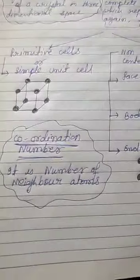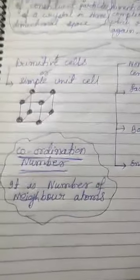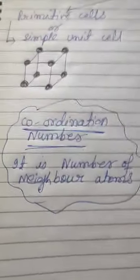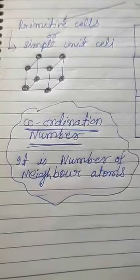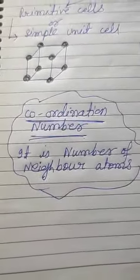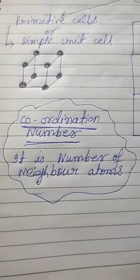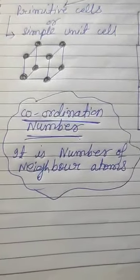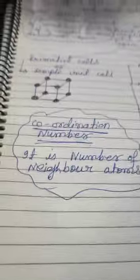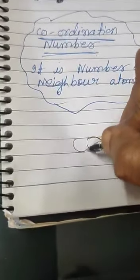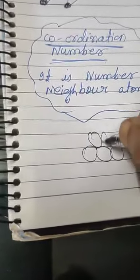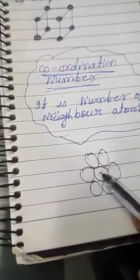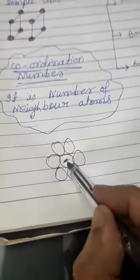In this explanation one more term I have included - that is coordination number. Here you are getting that number of constituent particles arranged. In this arrangement it will be possible that one particle is surrounded by the number of other particles. That is defined as coordination number. If one particle is surrounded by four particles or six particles, look at - one particle is there, it is surrounded by six other particles in this way. Are you getting? This is the particle whose coordination number we have to find out.